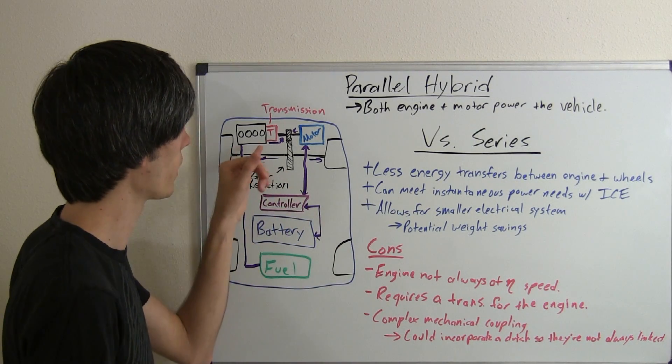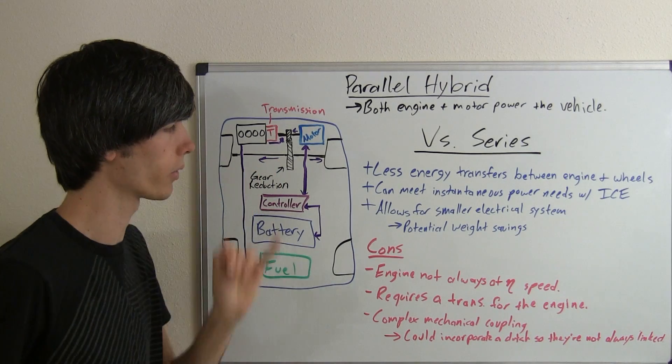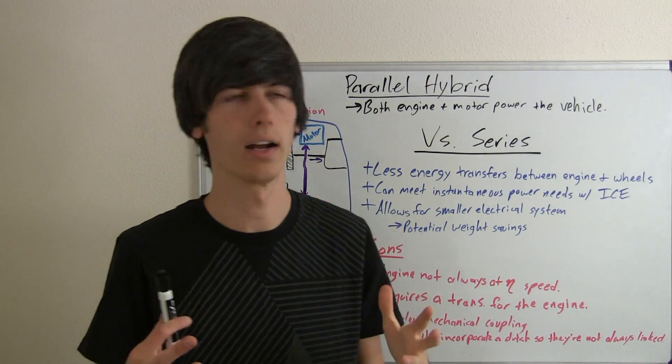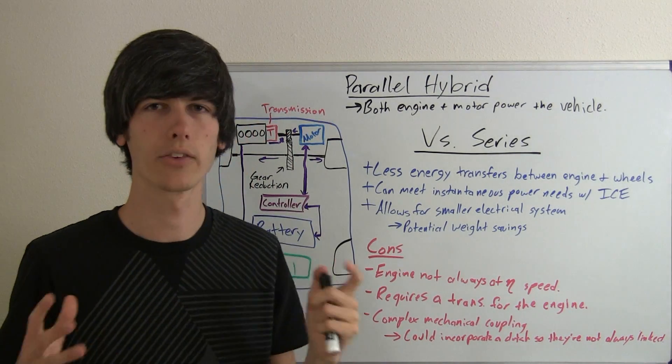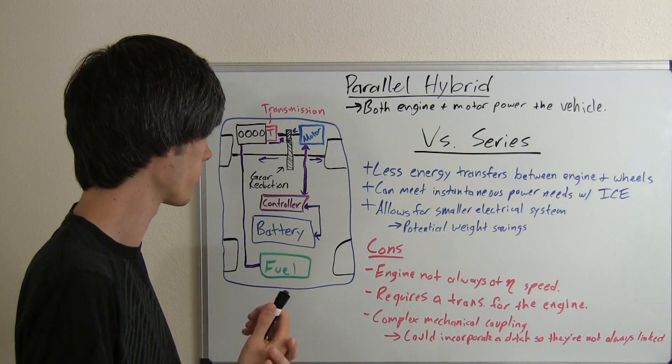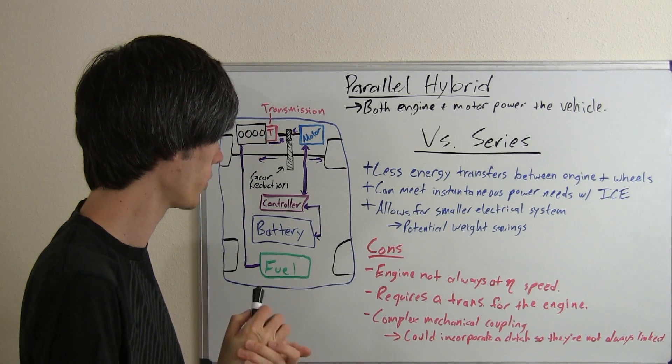And finally, by using the engine to also power the wheels, you can use a smaller electrical system and there's some potential weight savings there since the battery and motors and controllers can get fairly heavy when you add it all up.